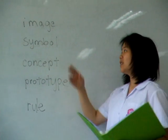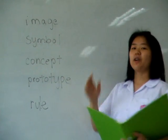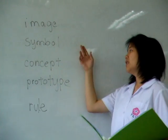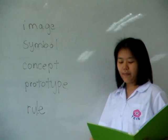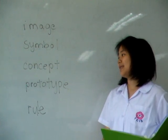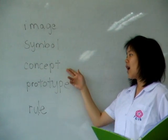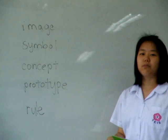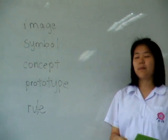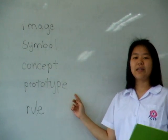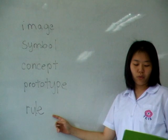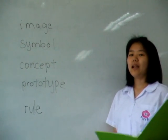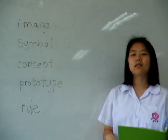There are a total of five types of thought. Image, or mental representation. Symbol, which is the most abstract — for example, sounds or designs. Concept, or a common attribution in the same category. Prototype are the best example. And rules, which is the statement of relation between concepts.